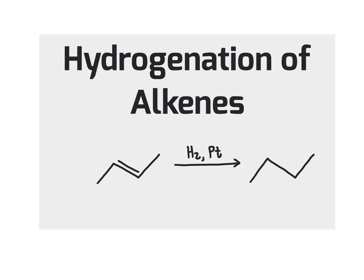In this unit, we continue our theme of looking at addition reactions that alkenes undergo. We're going to be focusing specifically on a reaction we refer to as hydrogenation, or adding hydrogen across the carbon-carbon double bond. As you can see in the example at the bottom of the screen, we've taken an alkene, treated it with H2 gas and a metal catalyst such as platinum. The two hydrogen atoms get added to the two carbons of the carbon-carbon double bond, giving us an alkane as the final product.